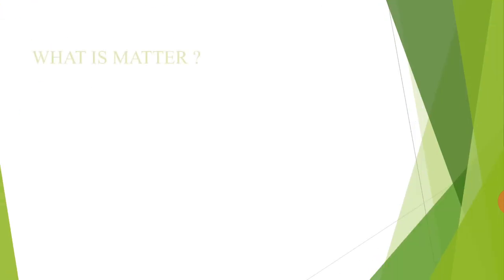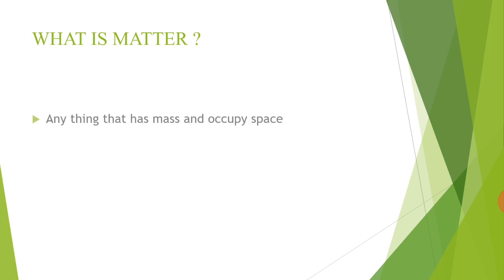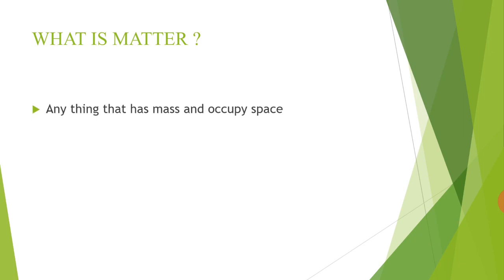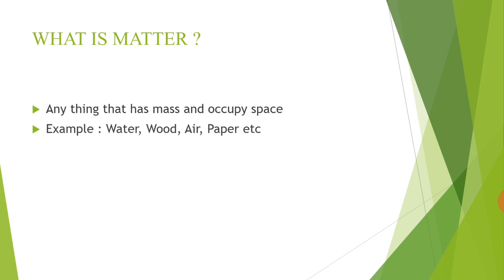Before going to explain chemistry, first we discuss what is matter. Anything that has mass and occupies space is called matter. According to this definition, everything in the universe is matter — like water, wood, air, and paper — because they have mass and they occupy space.